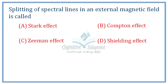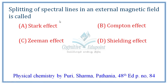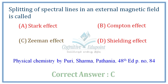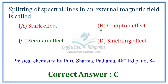Next question: Splitting of spectral lines in an external magnetic field is called what? The Stark effect involves splitting in an electric field. The Compton effect involves wavelength change. The shielding effect relates to nuclear charge. Splitting of spectral lines in a magnetic field is called the Zeeman effect.